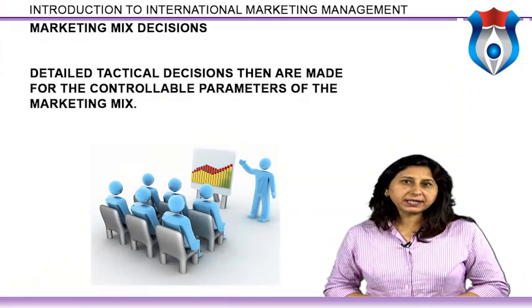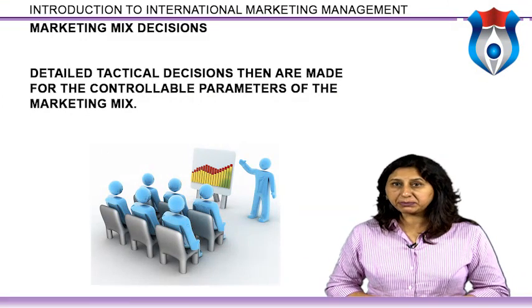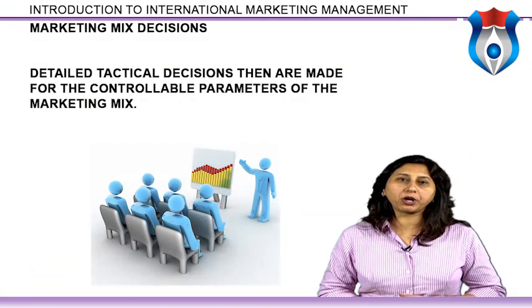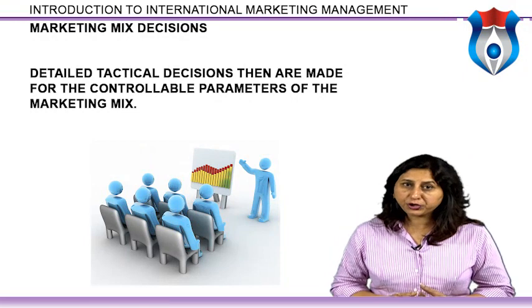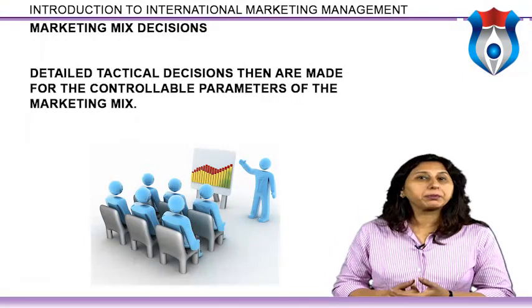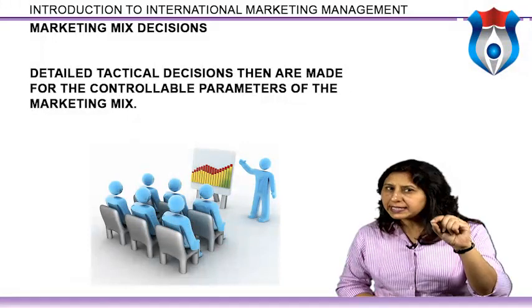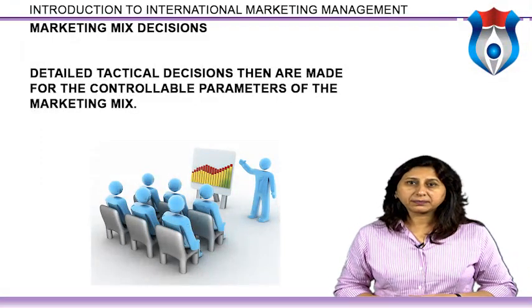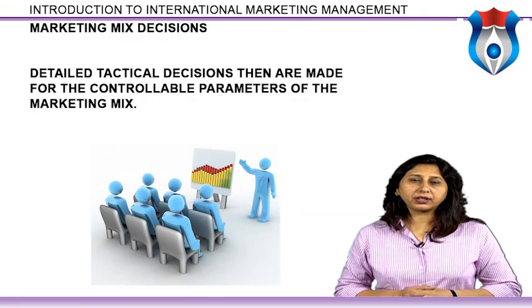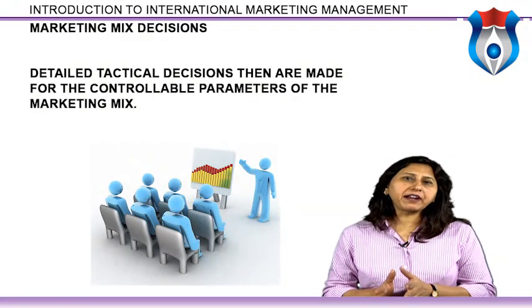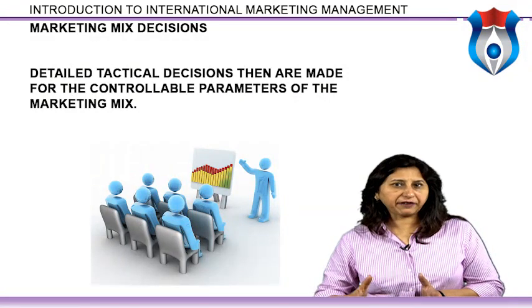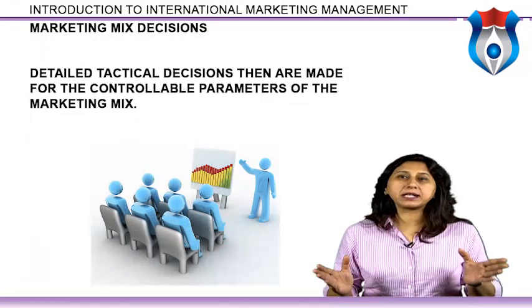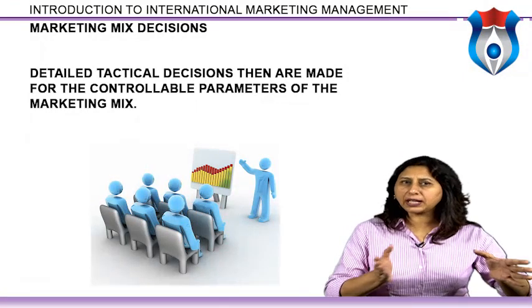Detailed tactical decisions are made for the controllable parameters of the marketing mix. Action items include product development — specifying, designing, and producing the first units — pricing decisions, distribution contracts, and promotional campaign development. At this point the marketing plan has been developed and the product launched. Given that few environments are static, the results of the marketing effort should be monitored closely. As the market changes, the marketing mix can be adjusted. Often small changes in consumer wants can be addressed by changing an advertising message.